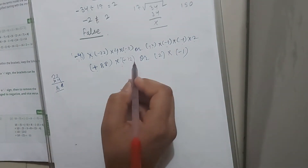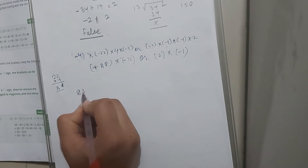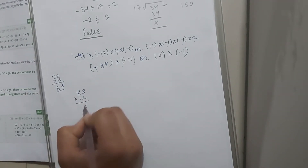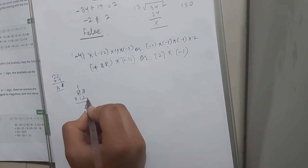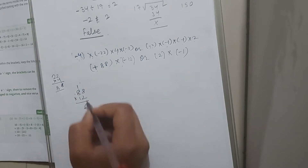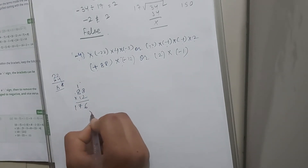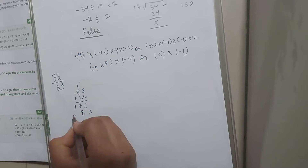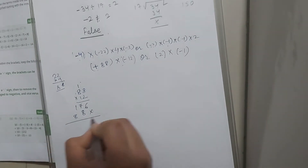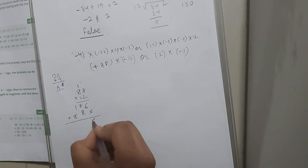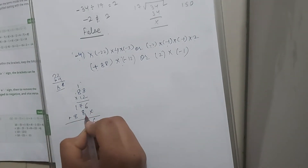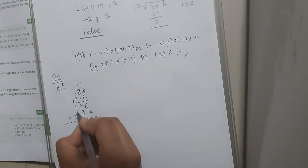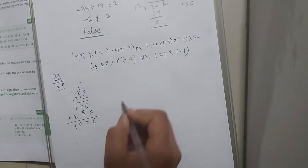Let's multiply 88 with 12. 8 times 12: 8 twos are 16, carry 1; 8 ones are 8, plus 1 is 9 — so we get 96. 8 ones are 8. Now add them: 6, 7 plus 8 is 15, carry 1; 8 plus 2 is 10. When we multiply opposite signs, the result is negative.